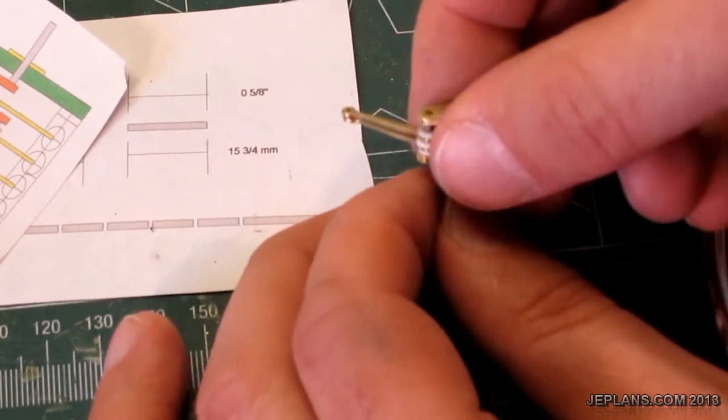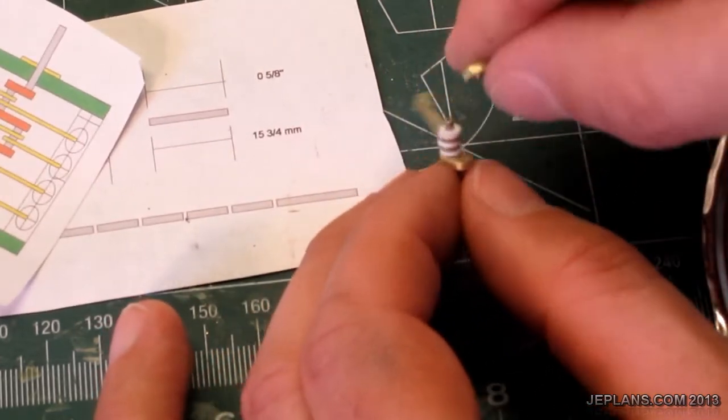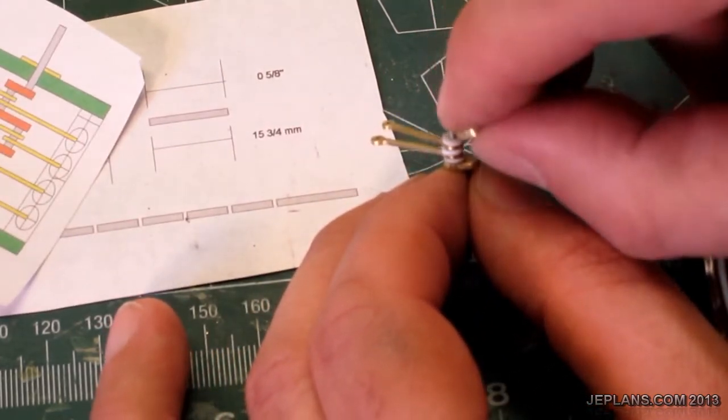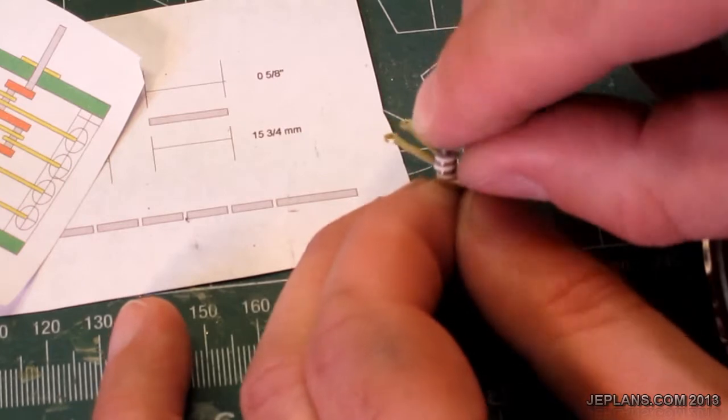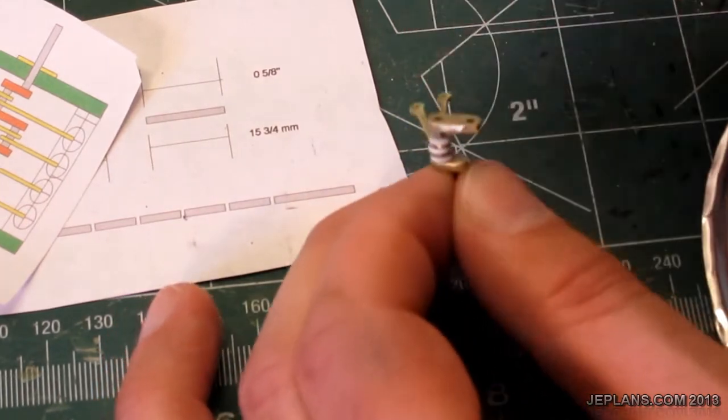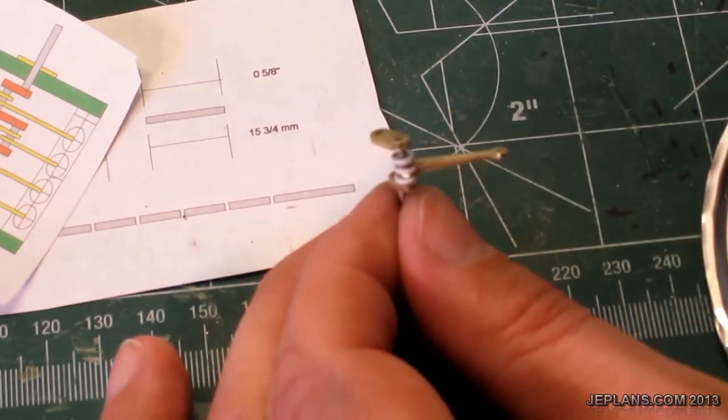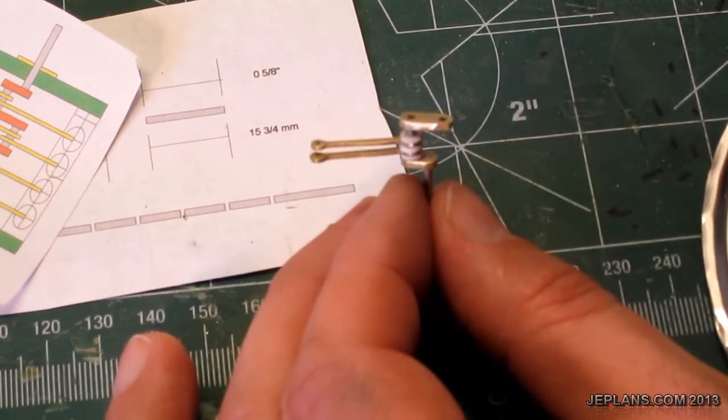I thought I might try super glue because a lot of times that binds metal pretty good together. But it doesn't look like I'll need it. I'll just keep stacking and assembling the crankshaft like so.